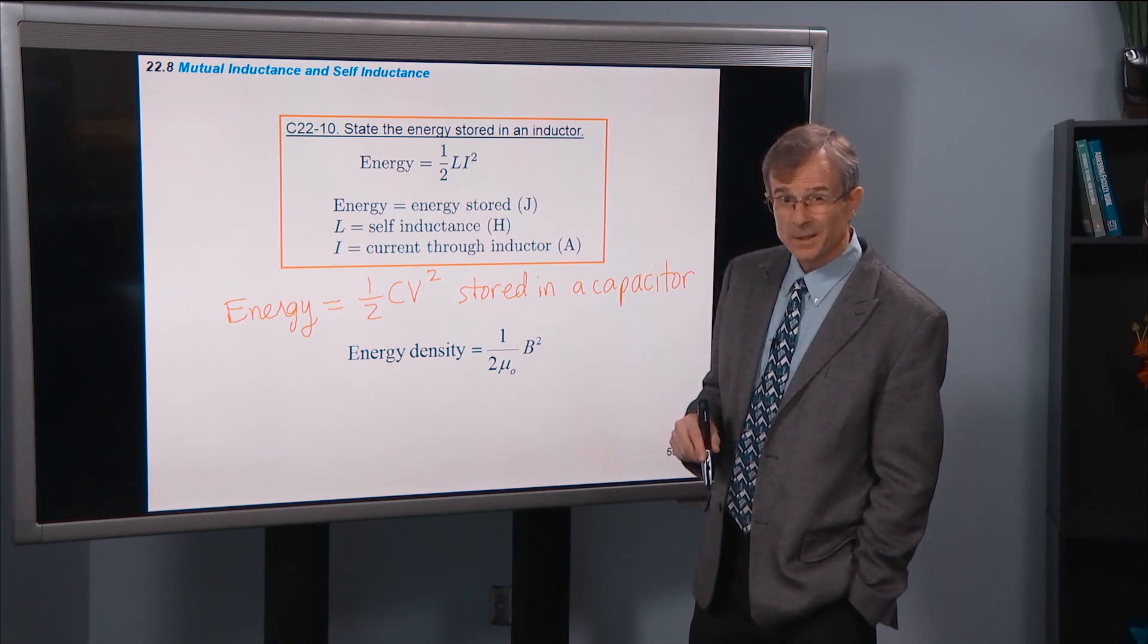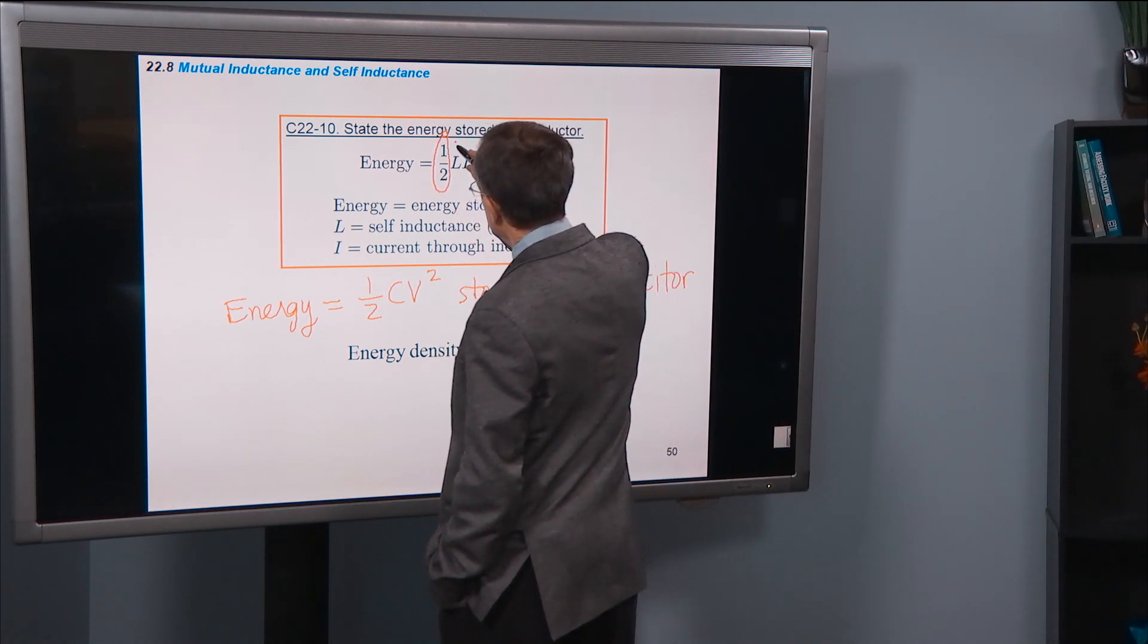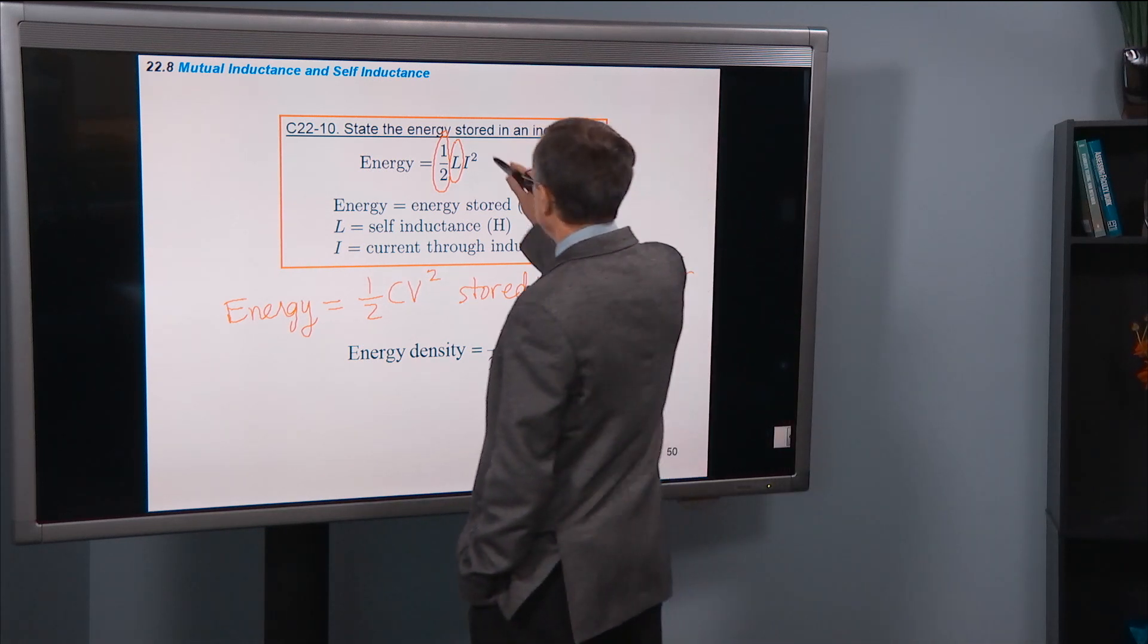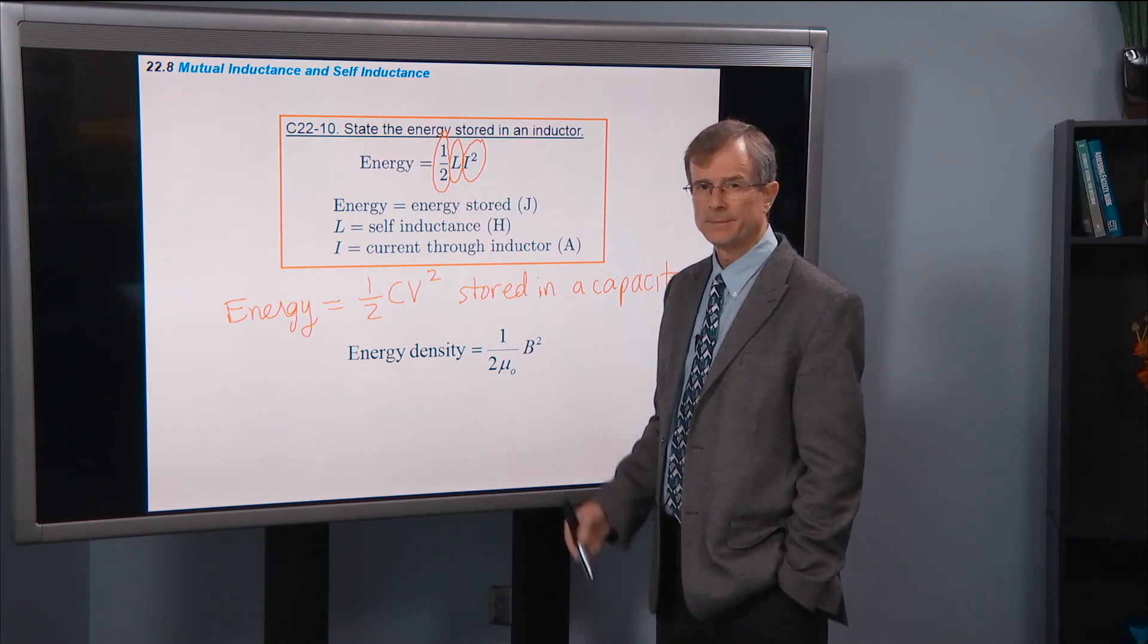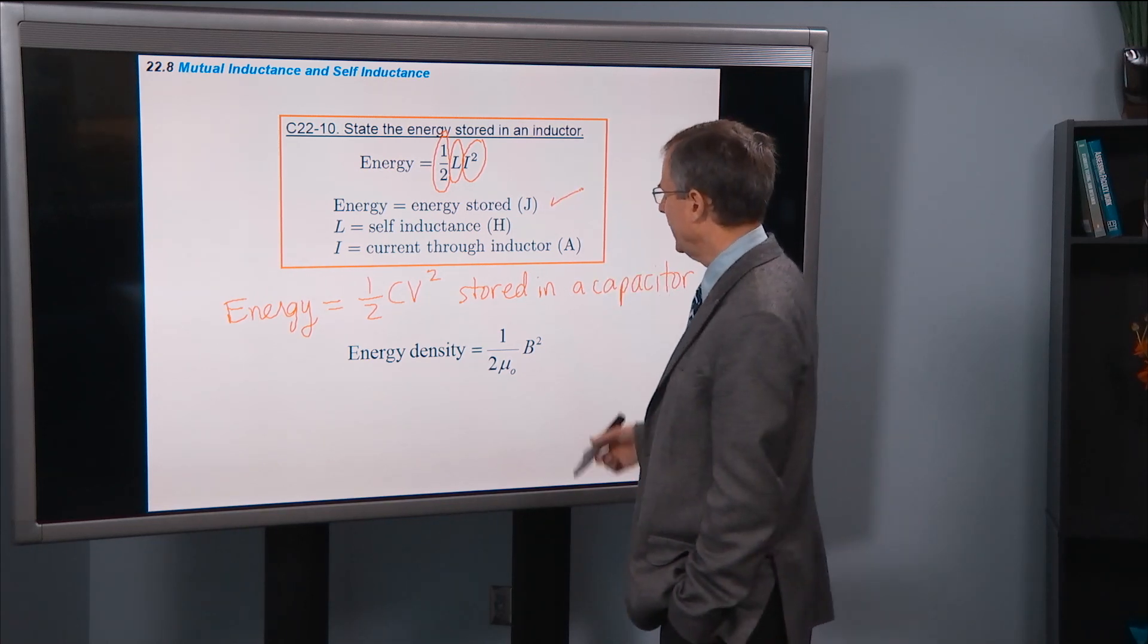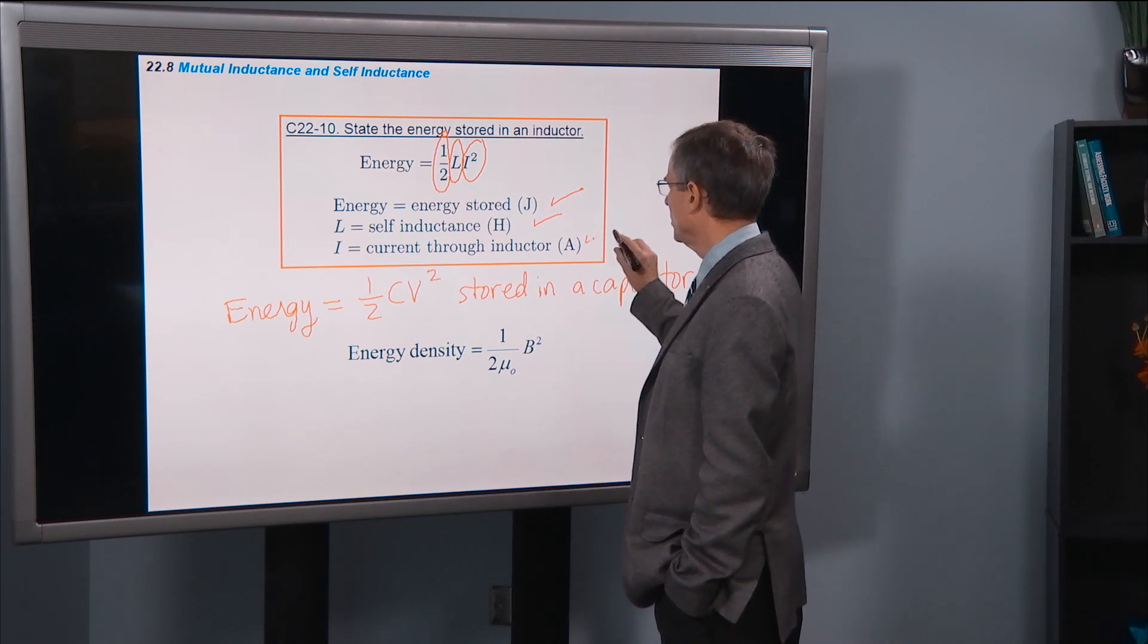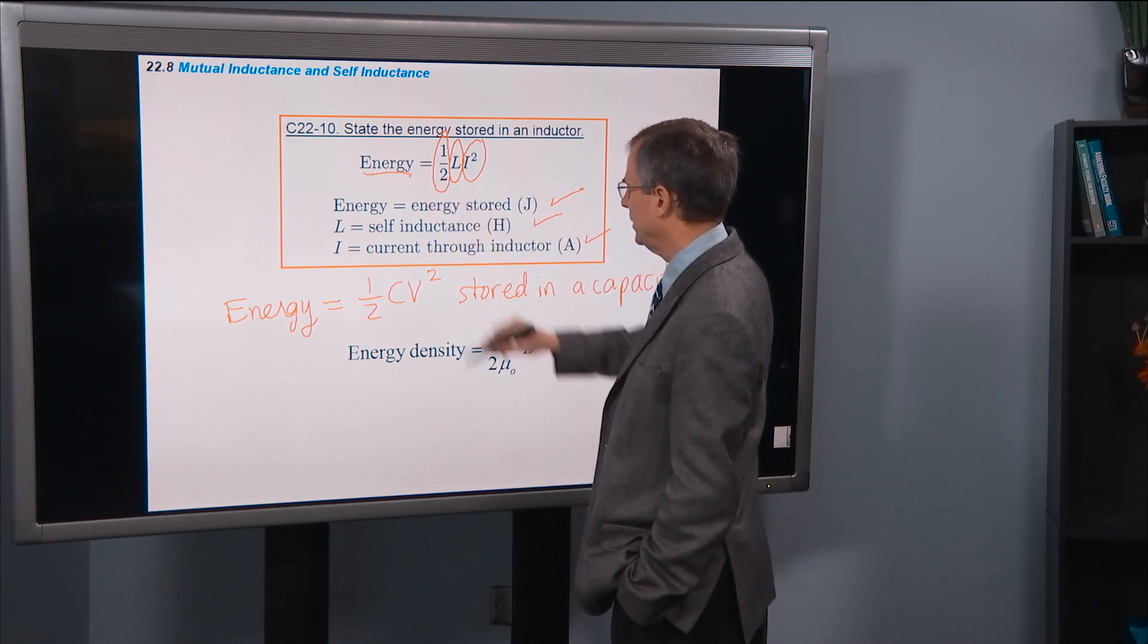The energy stored in an inductor has a one half. It has the inductance, L, instead of the capacitance, C. So it looks similar in that way. And instead of a voltage, it has the current through the inductor. So that's the energy stored, measured in joules, the usual way. Self-induction, inductance measured in the units of henry. And then the current through the inductor. And those units, the henry, if you work out the units, that'll end up giving you an energy in joules.